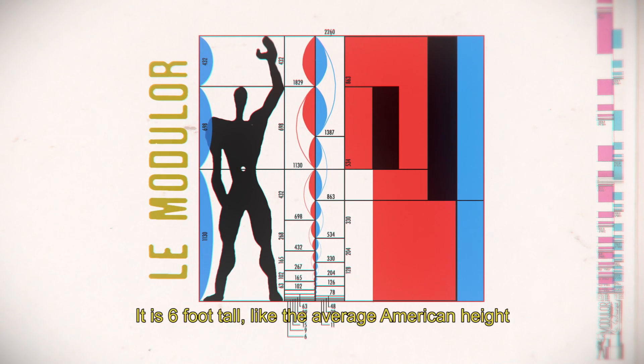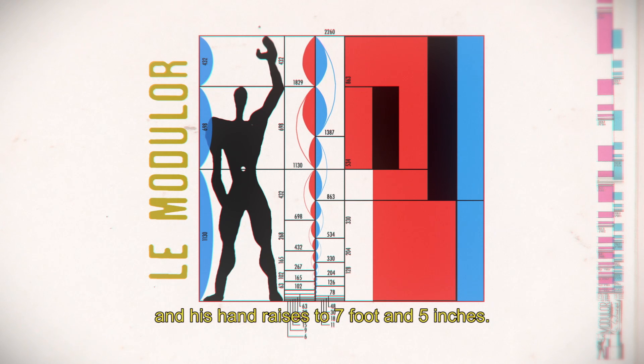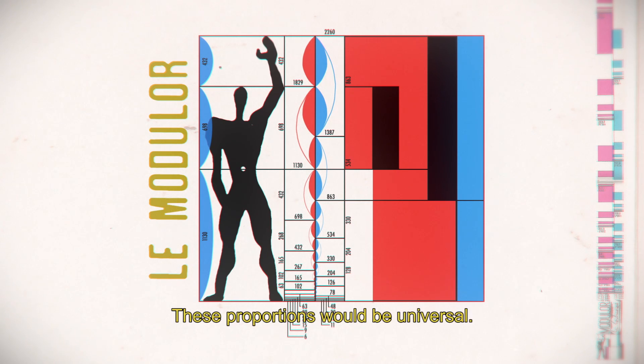The Modulor is six feet tall, like the average American height, and his hand raises to seven feet and five inches. These proportions would be universal.